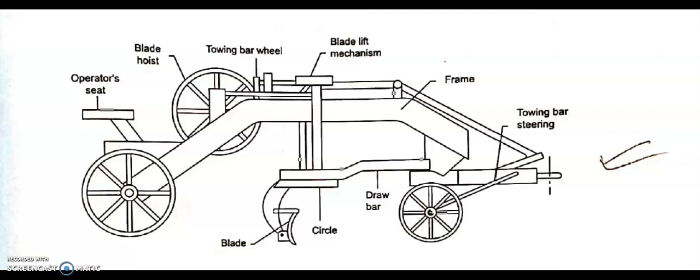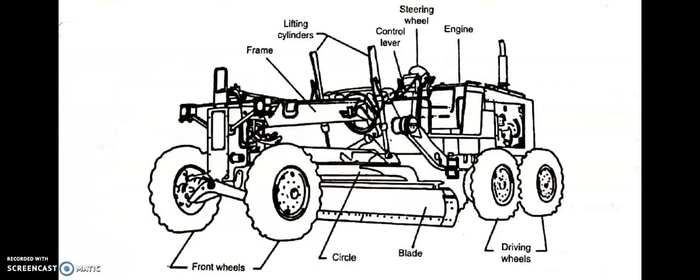Another grader type is hydraulic operated grader. Here, the blade operation and steering mechanisms are achieved by hydraulic means. Other systems such as the engine and power transmission system remain the same as the mechanically operated grader. The main components of the grader are: blade and circle, transmission, steering system, blade control unit, and brake system.